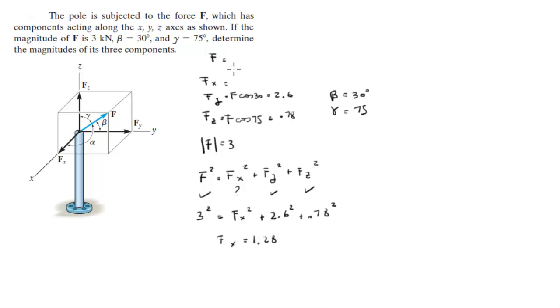So the Cartesian vector, let's put it right here, 1.28. The Cartesian vector is going to be 1.28i plus 2.6j plus 0.78k.